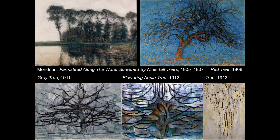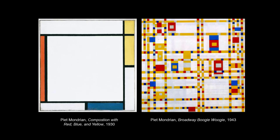For our final project, we're going to steal an idea from Mondrian. As you can see in this series of trees over the course of several years, he got more and more abstract, until we get to the point where it would be very easy to misidentify Tree from 1913 as a non-objective painting. Mondrian did go on to create non-objective paintings — Composition with Red, Blue, and Yellow from 1930 is a classic example. He never fully stopped investigating naturalism or abstraction, however, as we can see with Broadway Boogie Woogie.